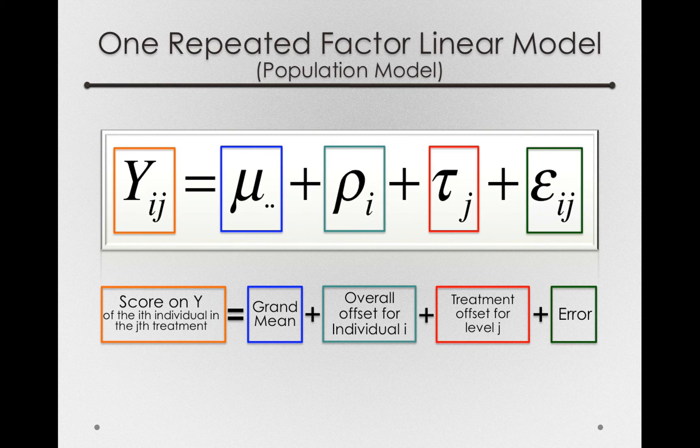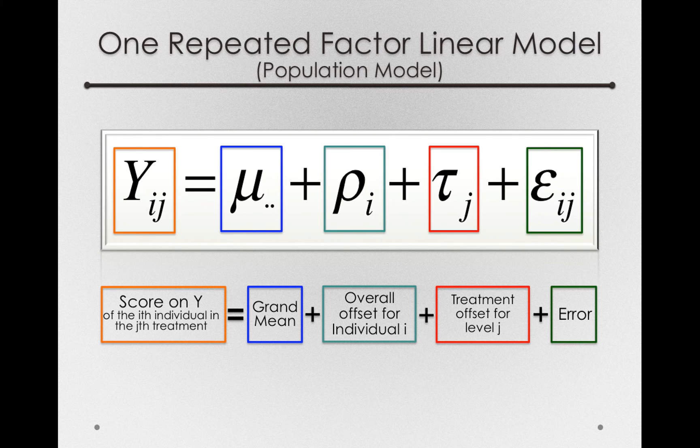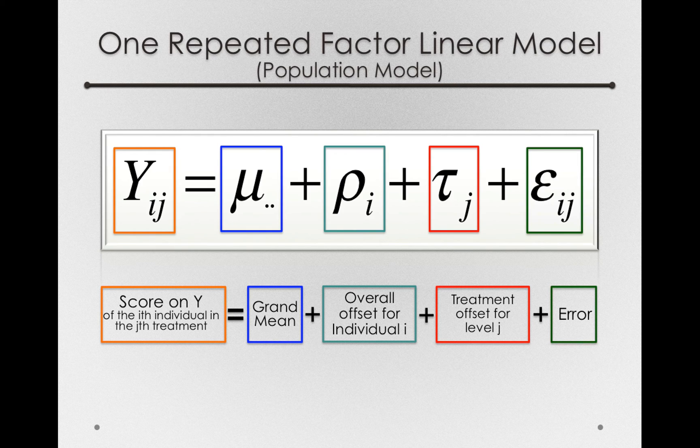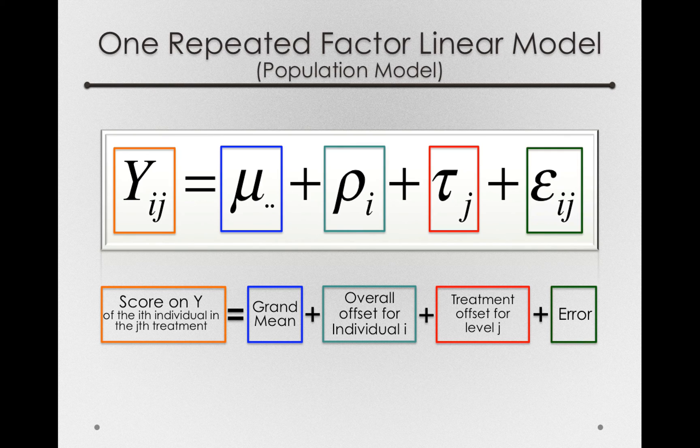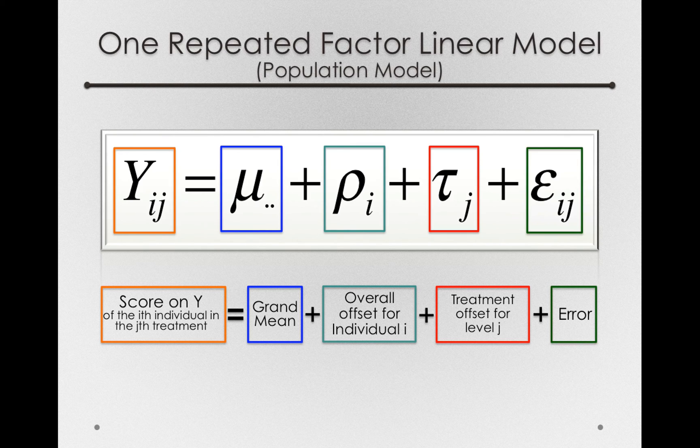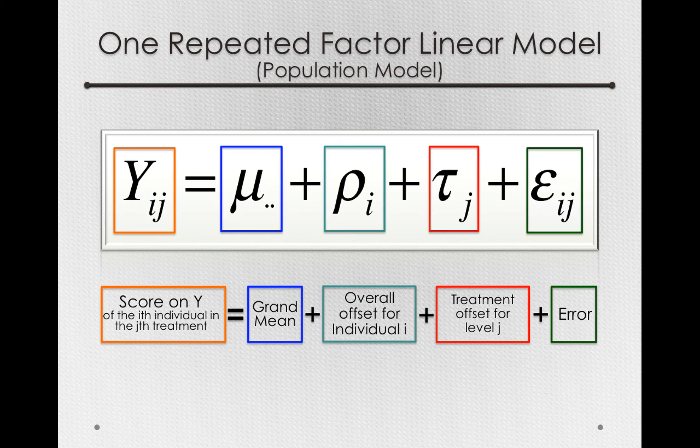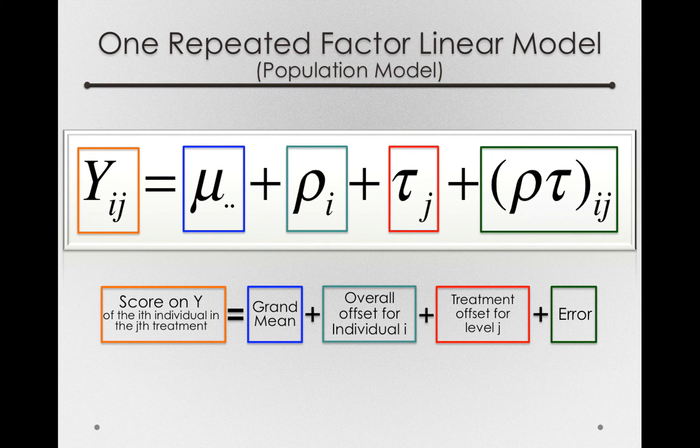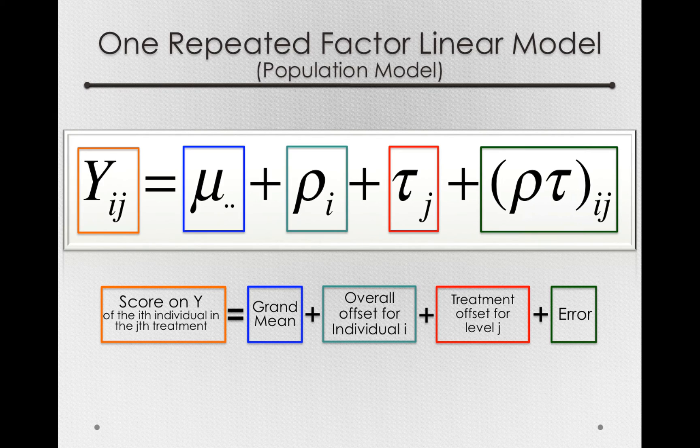Now, to foreshadow a little bit, we're going to have to think about this error term a little more in detail, and I want to hint at what it will be. It turns out that it's going to be an interaction term. Now, you notice that our one-factor linear model here seems to have two factors, and we've always modeled two-factor models with that interaction. Now, it turns out that the interaction between ρ and τ is actually the error term. That is, the degree to which individuals differ in their responses to the different wine.